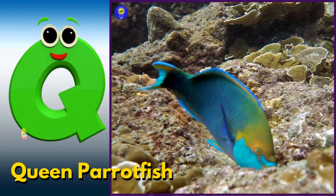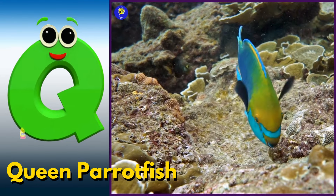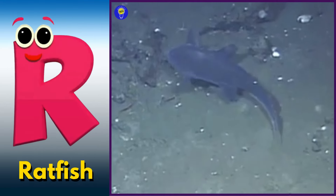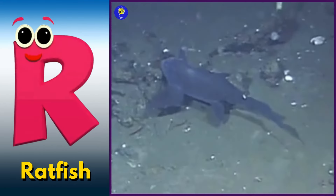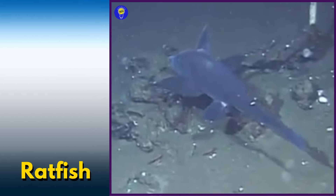Q is for queen parrotfish. Kuh, quuh, queen parrotfish. R is for ratfish. Ruh, ruh, ratfish.